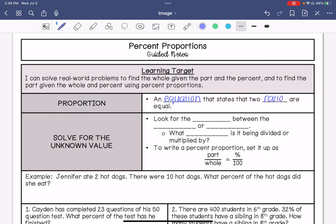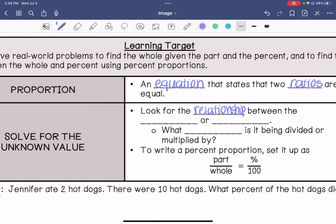If you want to solve for the unknown, you need to look for the relationship between either the numerators or the denominators. You need to ask yourself what number is either being divided or multiplied by to get to the other number.